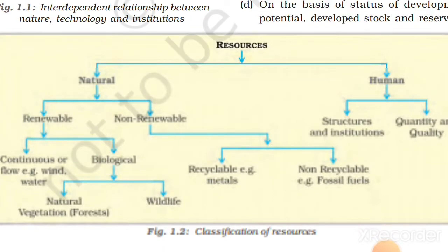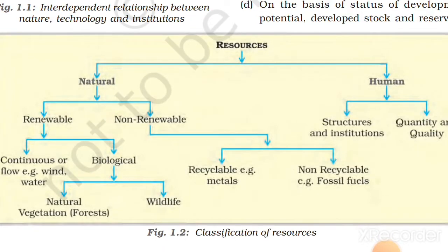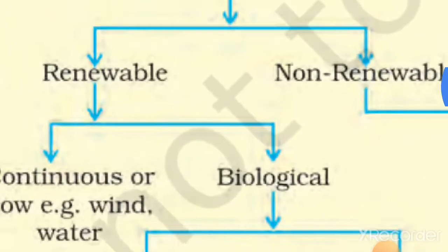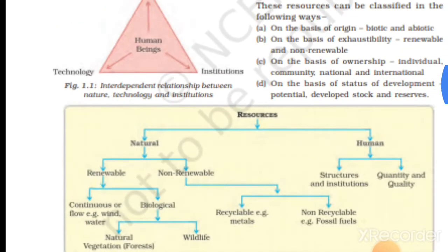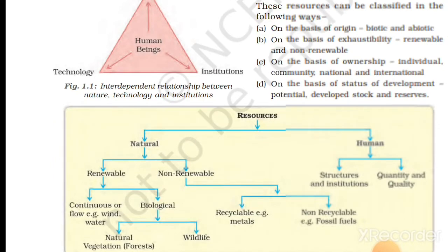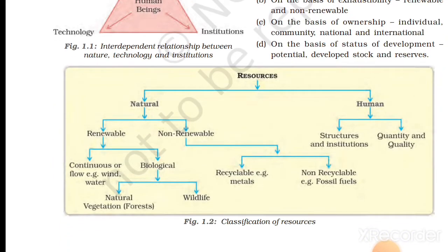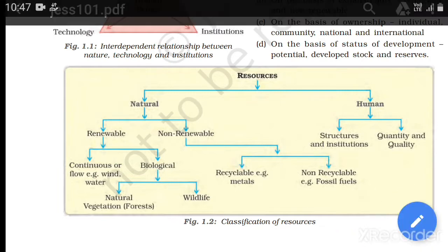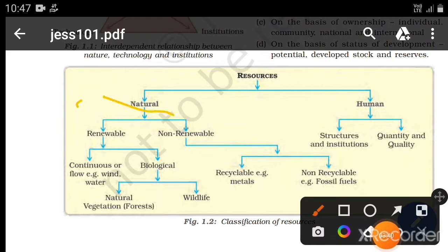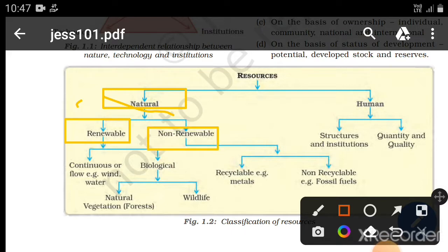Resources are basically divided into two types: natural resources and human-made resources. In this particular chapter, we will focus more on natural resources. Natural resources are of two types — renewable and non-renewable resources. Human resources are based on their qualities, quantities, structure, format, and institutions.